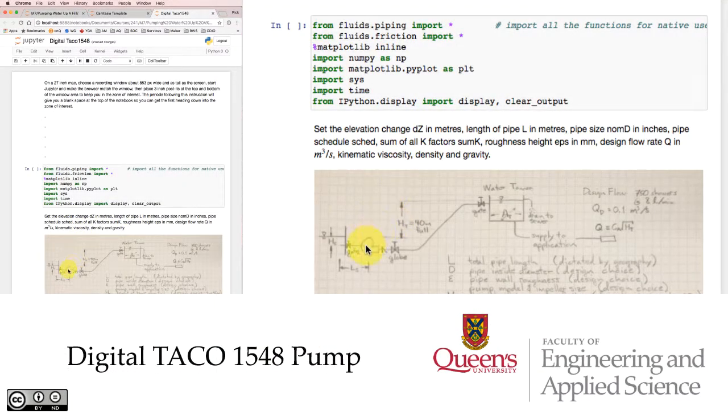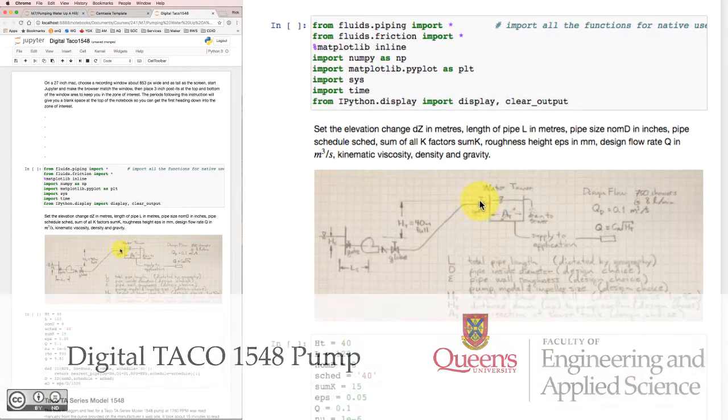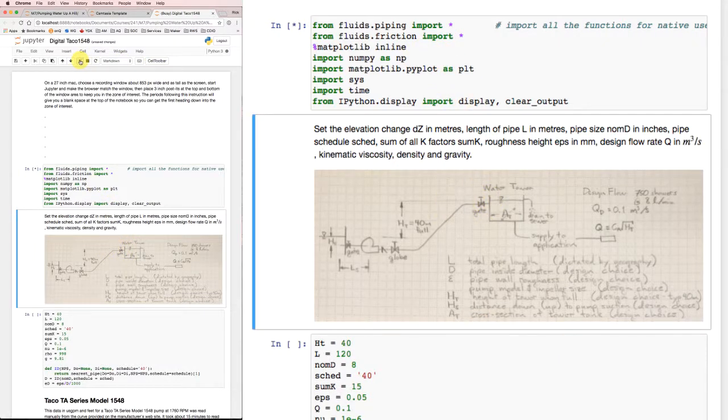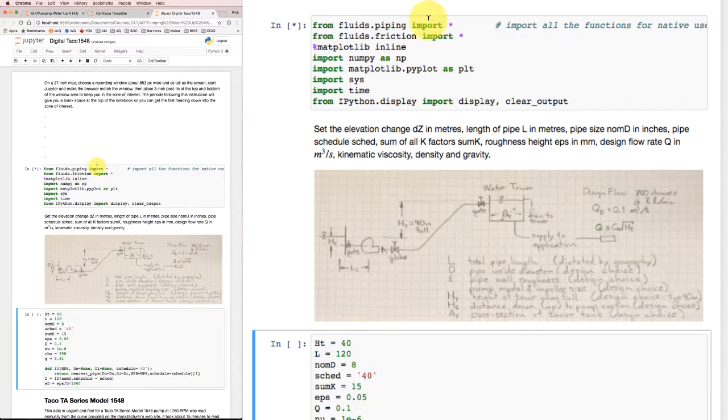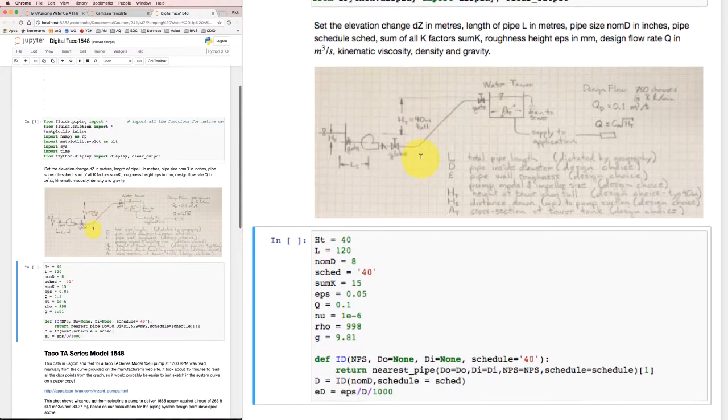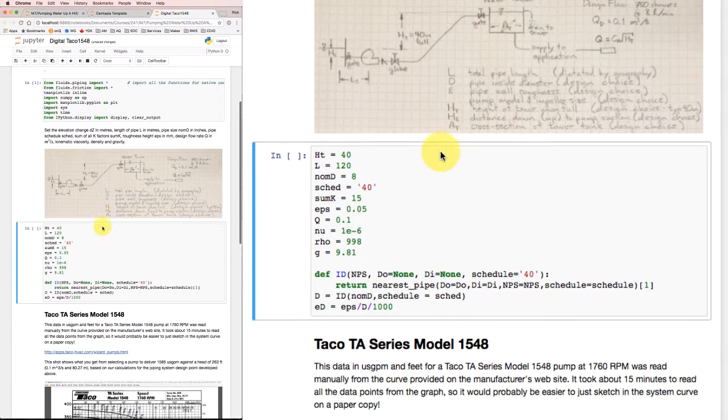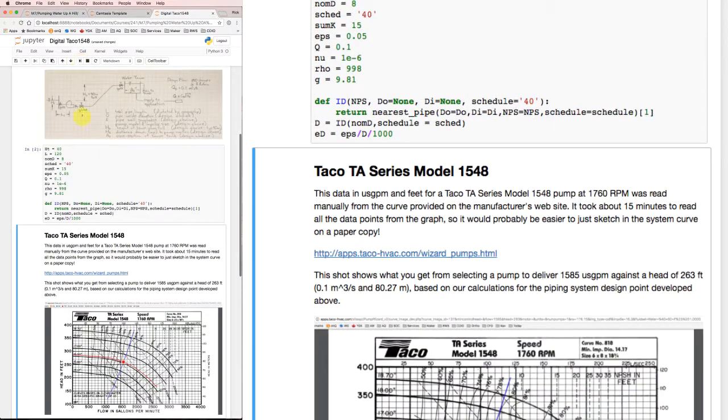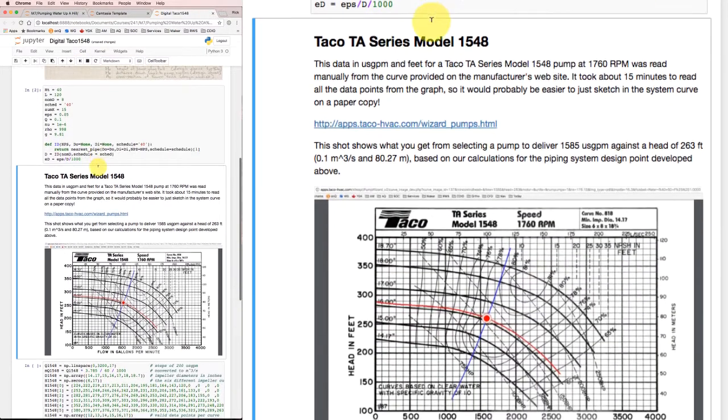We're back here in Jupyter Notebook working with a pump and piping system again to do some calculations. We'll start up here with this cell, import all the stuff that we need, and format that stuff so we've got our picture of the piping system. We'll need to set a bunch of initial values and make sure that we get the actual inside diameter and relative roughness in appropriate units. So I'll run that code now.